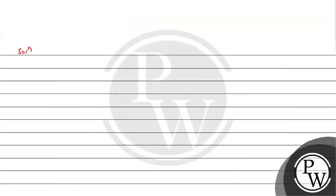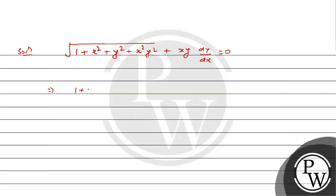So let us start the problem. We have the square root of 1 plus x squared plus y squared plus x squared y squared, plus xy dy by dx equal to 0. This can be written as the square root of (1 plus x squared)(1 plus y squared) plus xy dy by dx equal to 0.